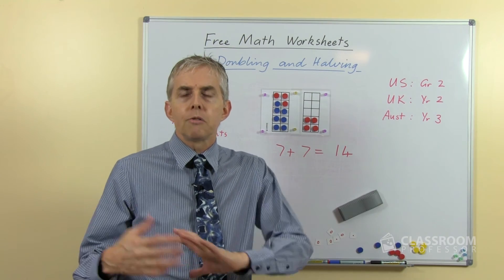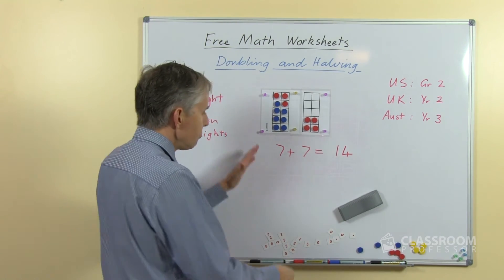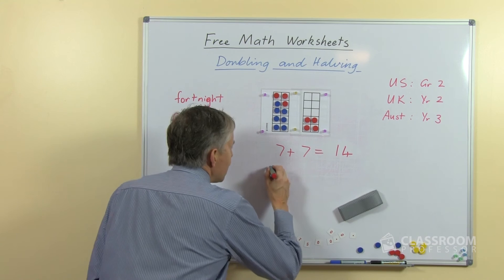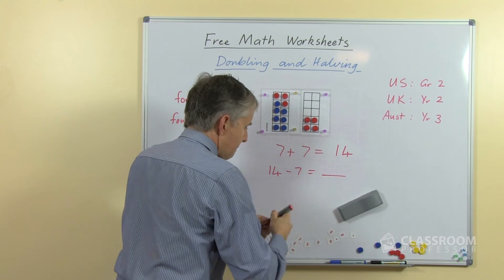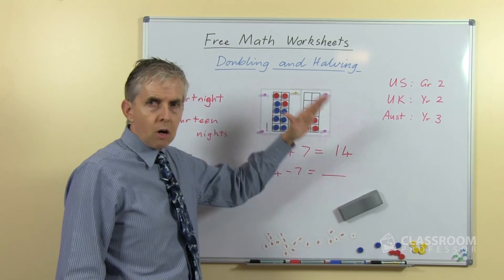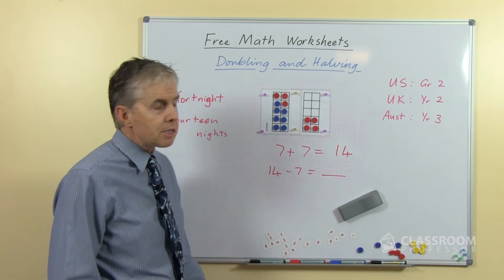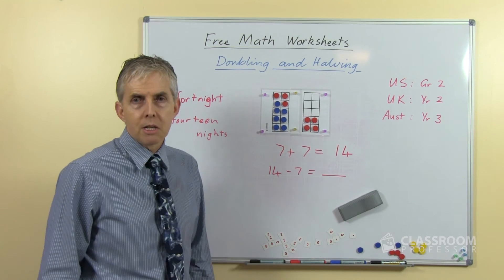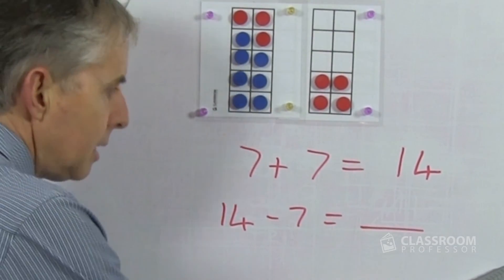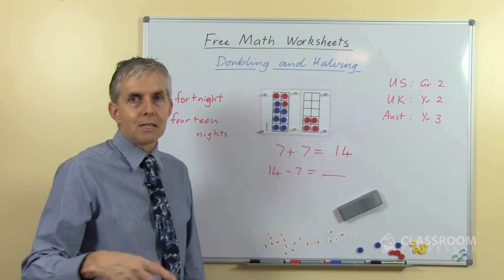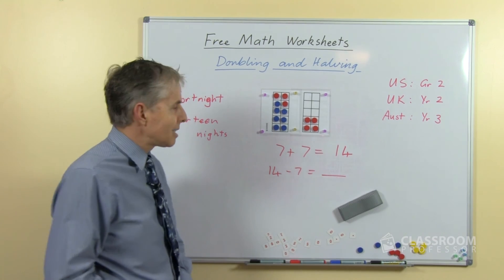The halving questions of course are the reverse of these or the inverse if you like of these questions, so for this particular example that would be a question like 14 take away 7 equals. Now if you just give students a whole page full of questions that are halving questions, after a while they'll recognize none of them are difficult because it's always the same number as this one. So if that's 7, that's 7, you know 6 take away 3 is 3, 10 take away 5 is 5, so basically you want to jumble them up a bit and not make them too predictable.